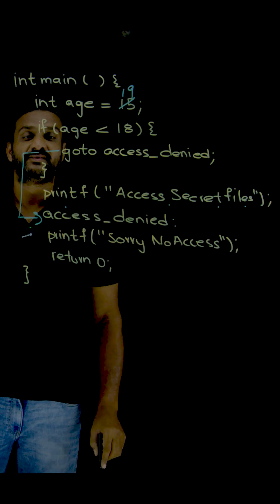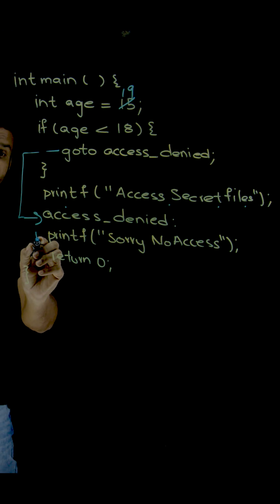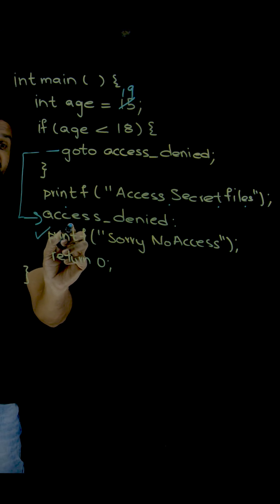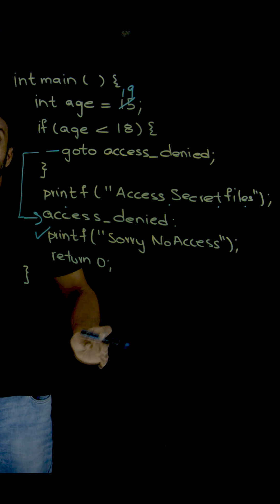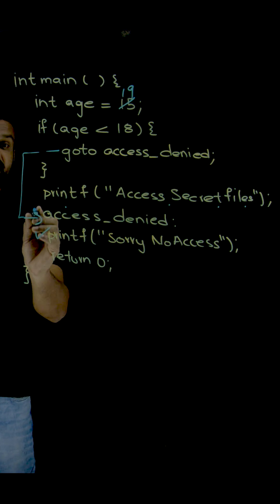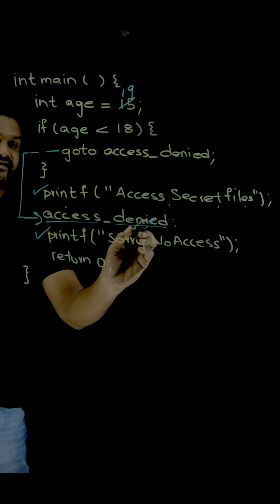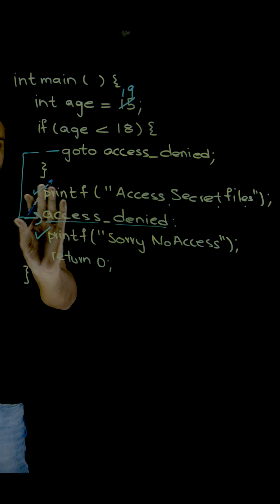Now after that, this printf statement which is related to the 'sorry no access' will also get printed. Means after this printf statement, access_denied is just an identifier, so the compiler is going to leave it.